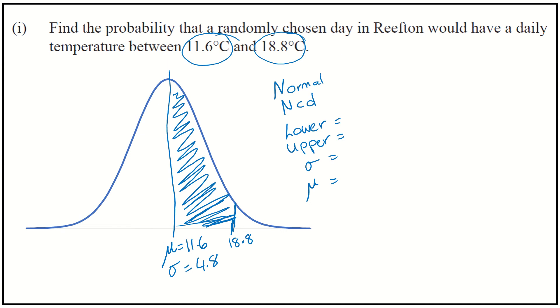When we're thinking about upper and lower values, we want to look at the area that we've shaded in. The area that's shaded in starts here at 11.6 and goes all the way across to 18.8. So that means 11.6 is my lower and 18.8 is my upper value, with a standard deviation of 4.8 and a mean of 11.6.